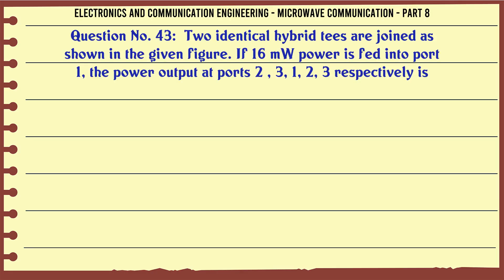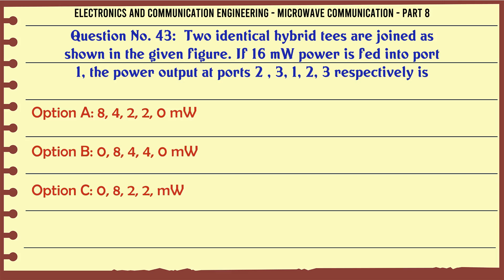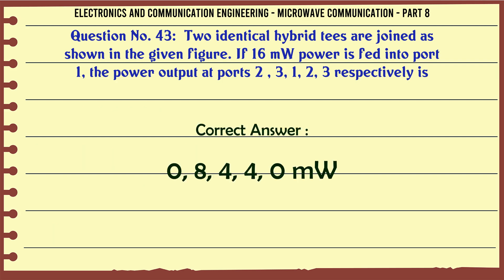Two identical hybrid T's are joined as shown in the given figure. If 16 MW power is fed into port 1, the power output at ports 2, 3, 1, 2, 3 respectively is — A. 8, 4, 2, 2, 0 MW, B. 0, 8, 4, 4, 0 MW, C. 0, 8, 2, 2 MW, D. 8, 2, 4, 2, 0 MW. The correct answer is 0, 8, 4, 4, 0 MW.